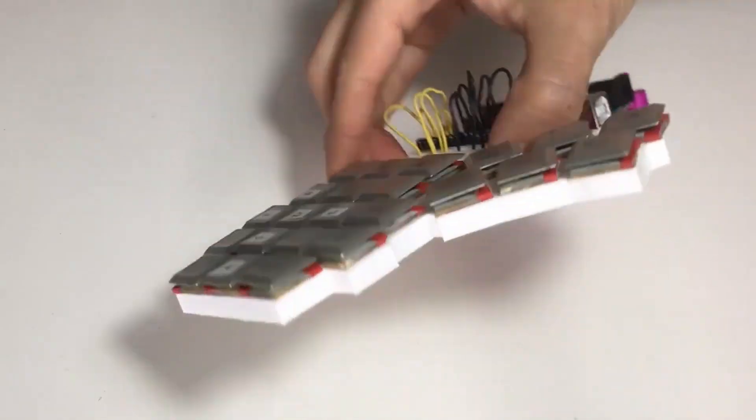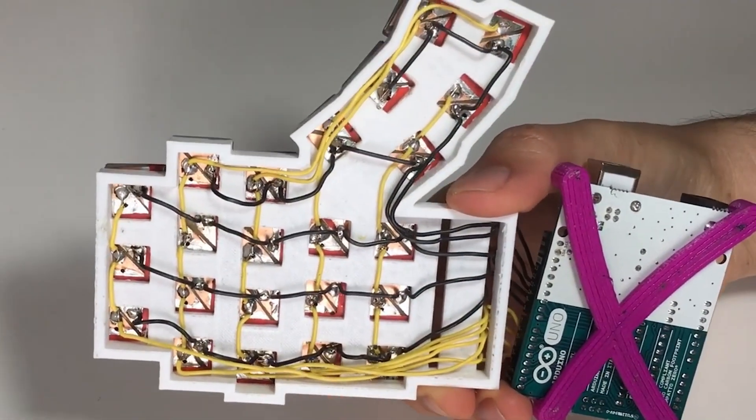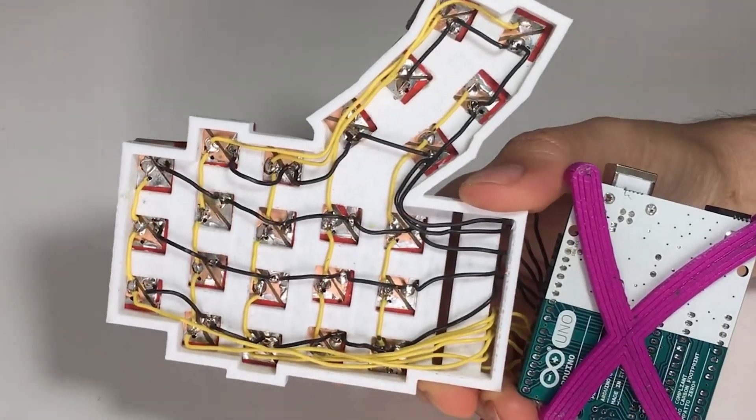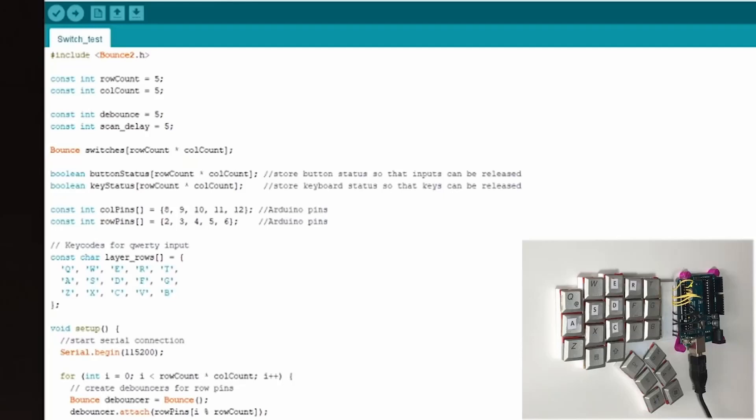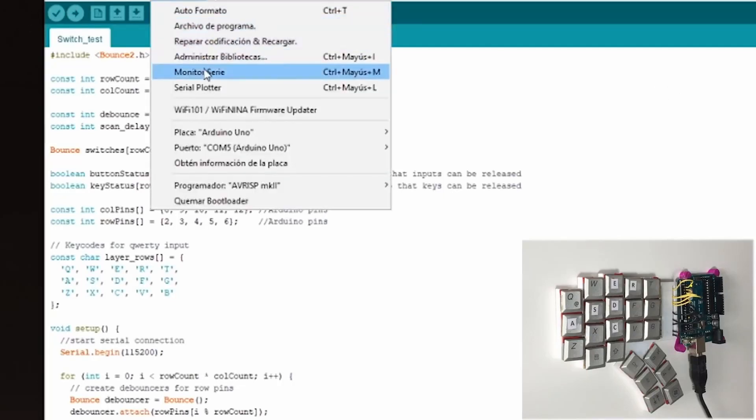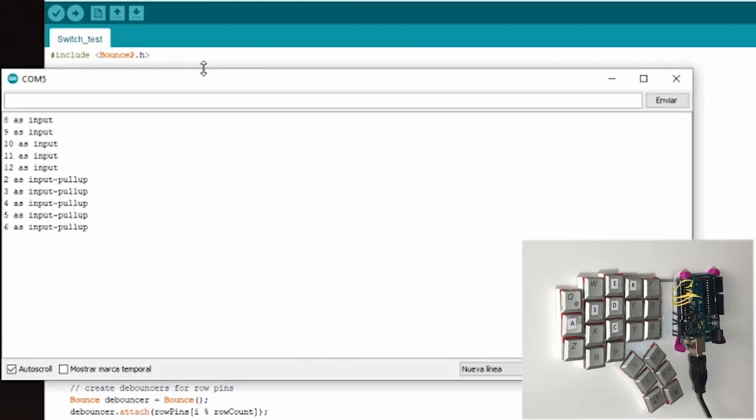I did a matrix of rows and columns and I connected them to an Arduino Uno. I developed a program to read all the rows and columns. Then the key is transmitted through a serial port. And now, it's time to test it.